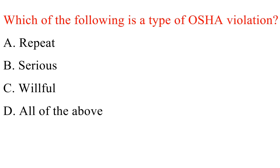Question. Which of the following is a type of OSHA violation? A. Repeat. B. Serious. C. Woeful. D. All of the above. Answer: D. All of the above.